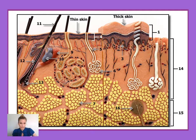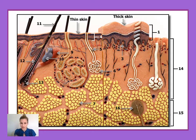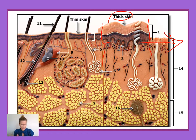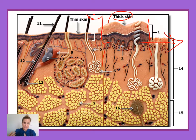We'll start with the hair. You'll notice first off that hair is present where the thin skin is, not the thick skin. Thick skin, which you see represented in this area right here, is present on the palms of our hands and the soles of our feet, and that skin is hairless. Thin skin, however, which is present over the rest of our body, does have hair present.